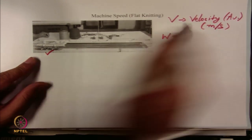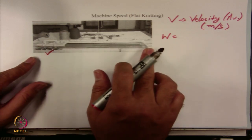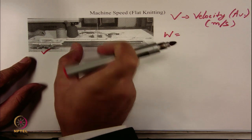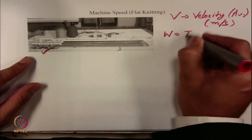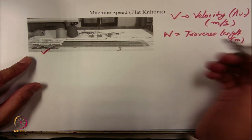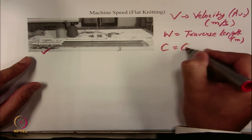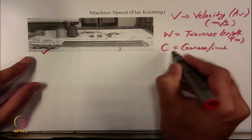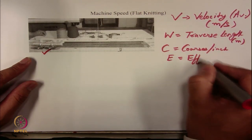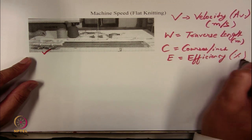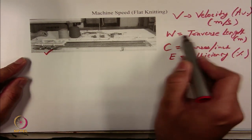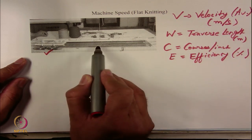The other variable is traverse length (W). We should know this because the bed is almost 1 to 2 meters in length, and sometimes you might not be using the entire length of the bed — only a selected portion by counting the number of needles. W is the traverse length in meter. Once the fabric is produced, you can easily count the courses per inch (C). And E is the efficiency — for example, if the worker is taking some break during production.